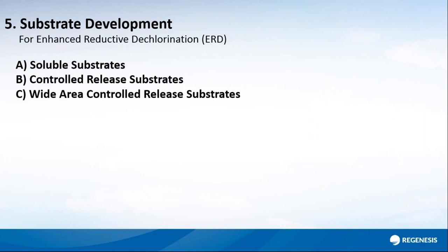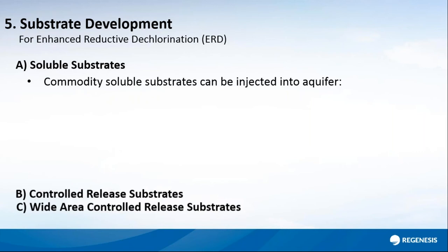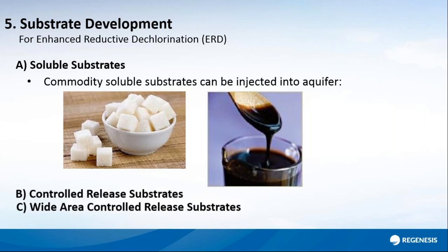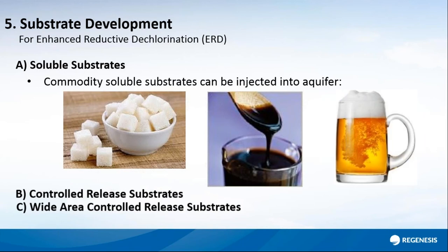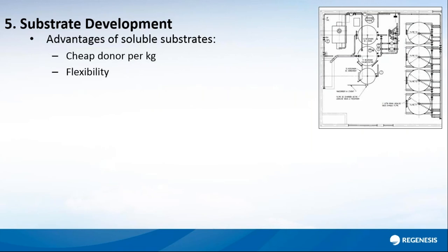About three decades ago, interest in enhanced reductive dechlorination grew due to high-level spill incidents such as Love Canal in America. The first iteration was to use soluble substrates — sugar water, molasses, or alcohol — often waste products from other industries that are cheap and soluble. These were injected into the ground to ferment and produce hydrogen. They still have advantages: they're cheap, easy to come by, and flexible to control. However, there are numerous disadvantages, which drove the development of purpose-built substrates.